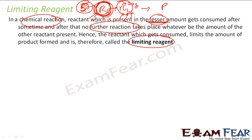Even if you keep adding the other reactant, the reaction won't happen because the limiting reactant is not there. That particular reactant is called the limiting reagent because it limits the amount of reaction. If you add more of the limiting reactant, the reaction will start again. But if it's all used up, even if you keep pumping in reactant 2, nothing will happen because reactant 2 needs reactant 1 to react — and there is no reactant 1, only reactant 2. The reaction won't happen.